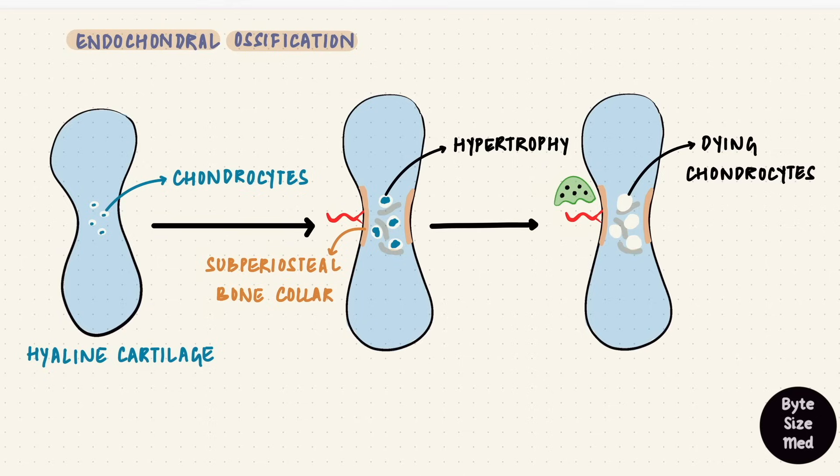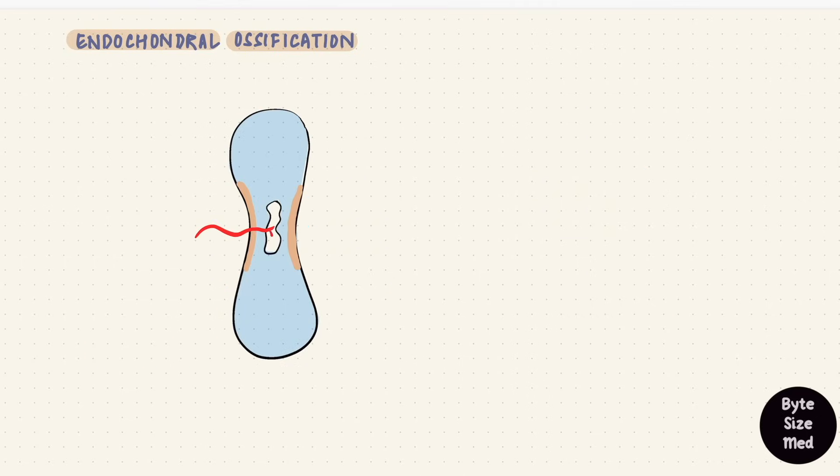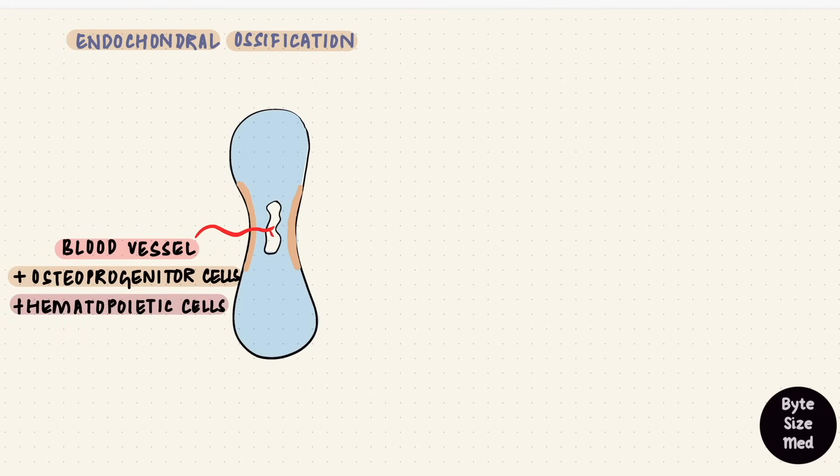The osteoclasts, that's our bone digesting cells, they form spaces in the bone collar. That allows the blood vessels along with osteoprogenitor cells and hematopoietic cells to reach the area where the chondrocytes have died. This is an osteogenic bud, and this area in the center of the diaphysis is the primary center of ossification.